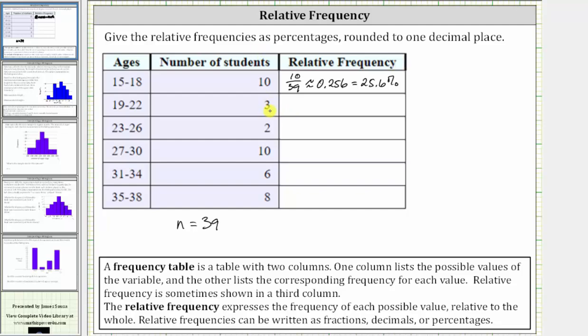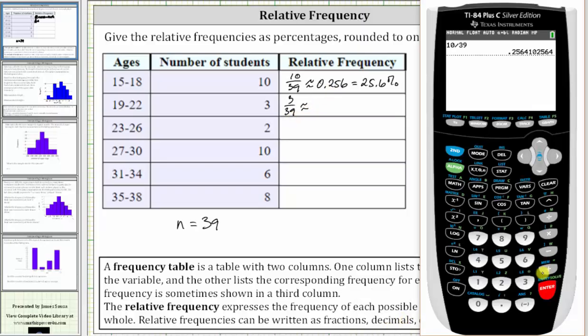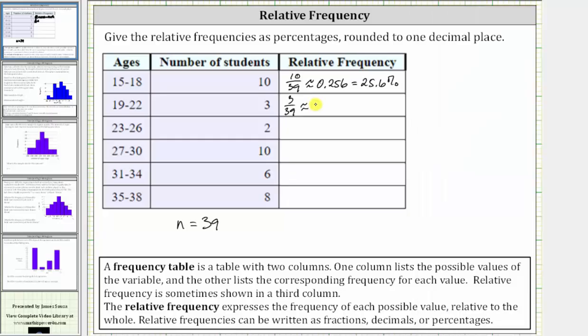Next, there are three students with ages 19 through 22, and therefore the relative frequency is 3/39, which does simplify to 1/13. But again, we're looking for the percentage, so leave it in this form and divide to find the decimal to three decimal places. 3 divided by 39 to three decimal places is 0.077, which is 7.7%.